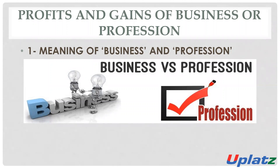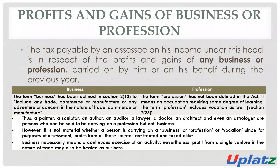What is the meaning of business and profession? The tax is payable by the assessee on income, which means profit and gain of any business or profession carried on by the assessee during the previous year. During the previous year, any business or profession carried on by the assessee — and on such business or profession he earned profit or gain — then such profit will be taxable under the head of PGBP.